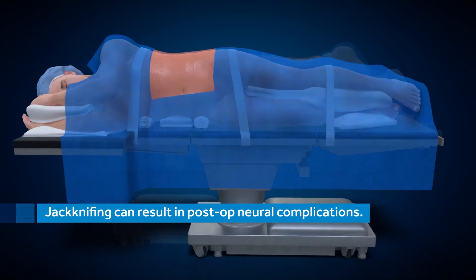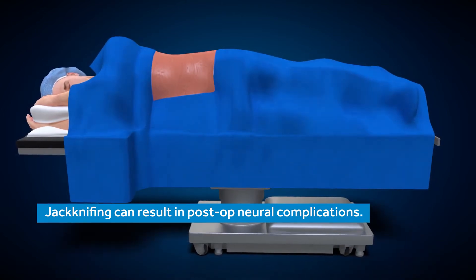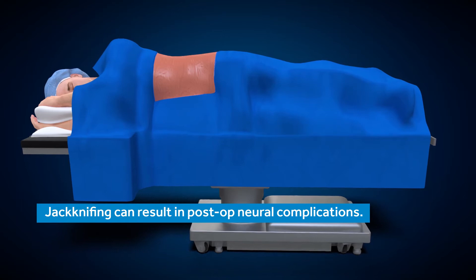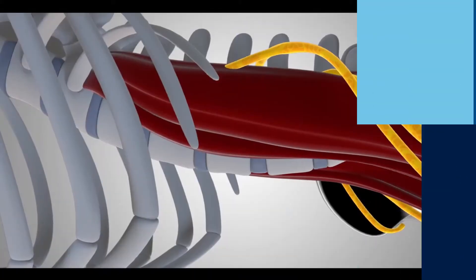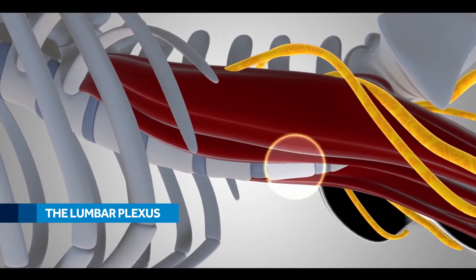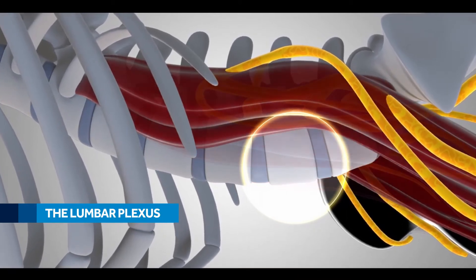OLIF procedures do not require jackknifing of the surgical table, as OLIF is performed at a trajectory outside the anterior portion of the psoas muscle. This trajectory is also away from the nerves of the posterior aspect of the psoas.